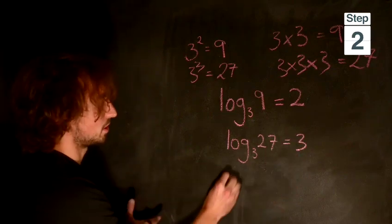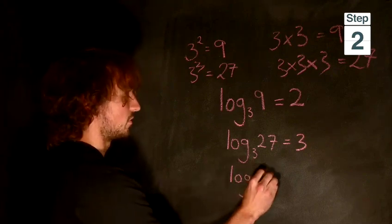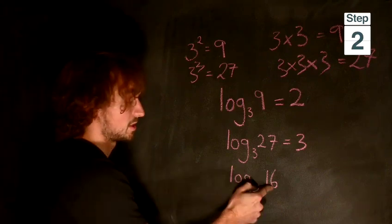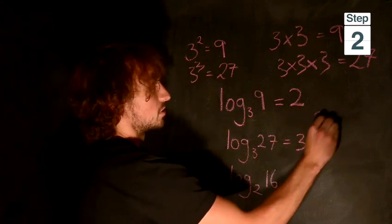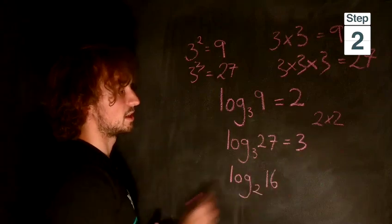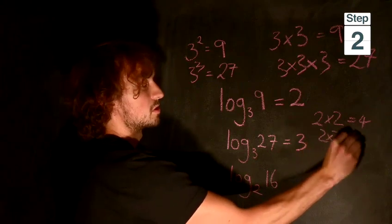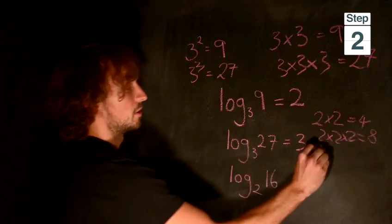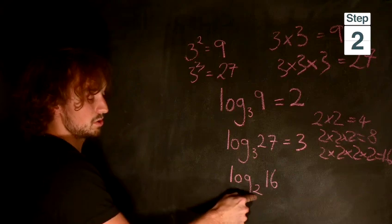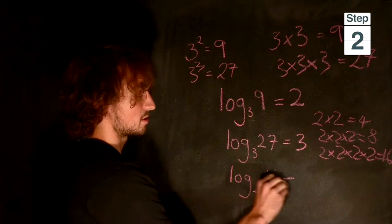So equivalently if we looked at log base 2 of 16, this says 2 to the power of what is 16. How many times do we need to multiply 2 by itself to equal 16? 2 times 2 is 4, 2 times 2 times 2 is 8, so 2 cubed is 8. 2 times 2 times 2 times 2 is equal to 16. So 2 to the power of 4 is 16, and the answer is 4.